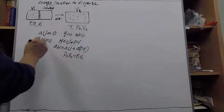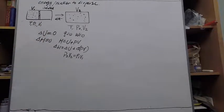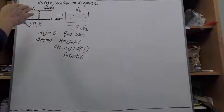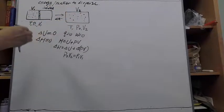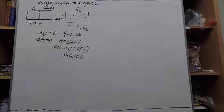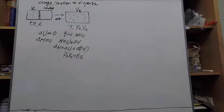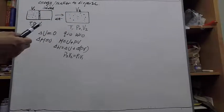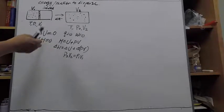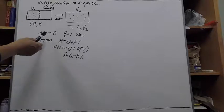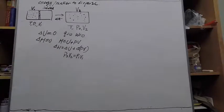So ΔH and ΔU will not be useful here — these two state functions cannot predict the difference between the two states, because both the internal energy and enthalpy are the same at the starting and ending points. We know the system has changed because the gas became more dispersed, but all the state functions we have discussed so far — whether internal energy or enthalpy — show no difference.